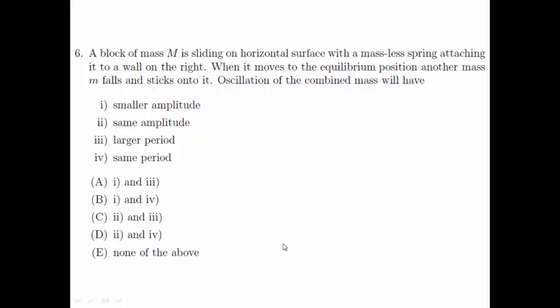Welcome to Singapore Junior Physics Olympiad 2012, general round, question 6. A block of mass M is sliding on a horizontal surface with a massless spring attaching it to a wall on the right.